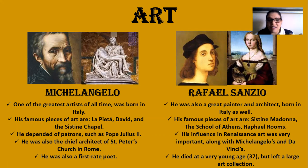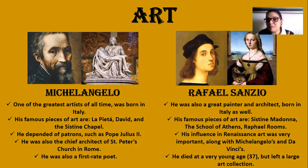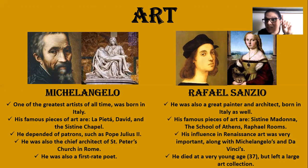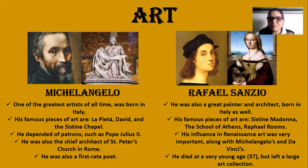The next one is Raphael Sanzio, also a great painter and architect born in Italy. His famous pieces of art are the Sistine Madonna, The School of Athens — which appeared in the previous presentation — and the Raphael Rooms, a series of paintings that tell a story in a place in the church. His influence on Renaissance art was very important alongside Michelangelo and Da Vinci. He left many unfinished works, and his students tried to finish them by adopting his style, but they remained as cheap copies. He died very young at 37, yet left a large art collection still seen in museums around the world.